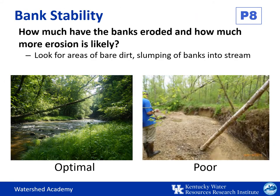Next, let's consider bank stability — how much the banks have eroded and how much more erosion is likely. When large areas of bare dirt, exposed tree roots, undercut banks, and trees falling into the stream are seen along the banks, it's a sign they aren't stable. Ideally, you'll see very minimal evidence of erosion, with less than 5% being optimal and 60 to 100% being poor. Eroding sediment covers up and fills in places where animals live, and high levels of mud and sediment make it difficult for fish to absorb dissolved oxygen and find food. For this parameter, you'll face downstream and evaluate the left bank and right bank separately.